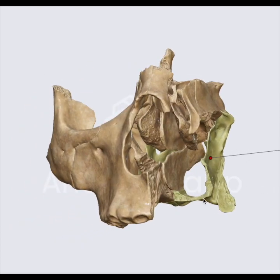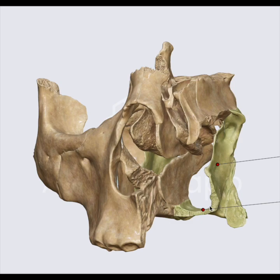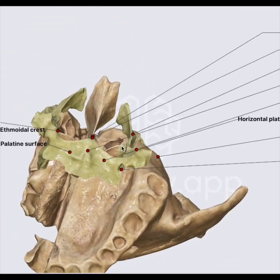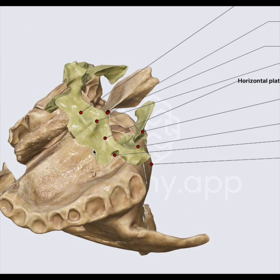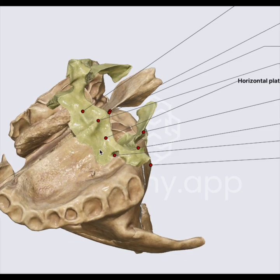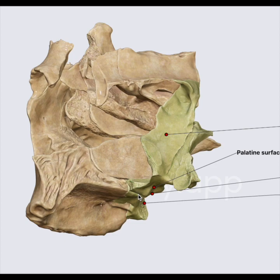Let's start from the basics. What does this palatine bone do? They form the hard palate, along with the maxillary bone. They also form the floor of the nasal cavity. The palatine bones are located at the back of the nasal cavity, as mentioned before.